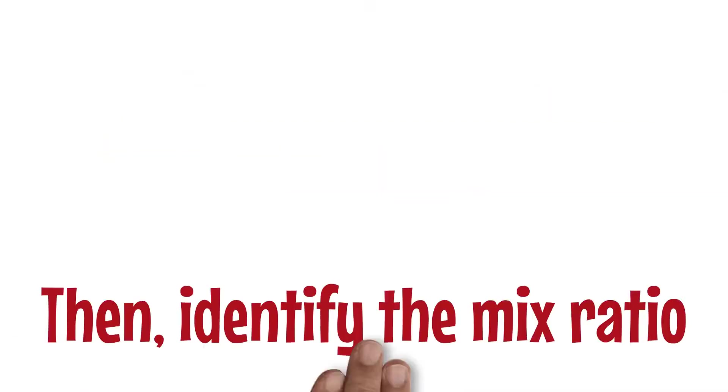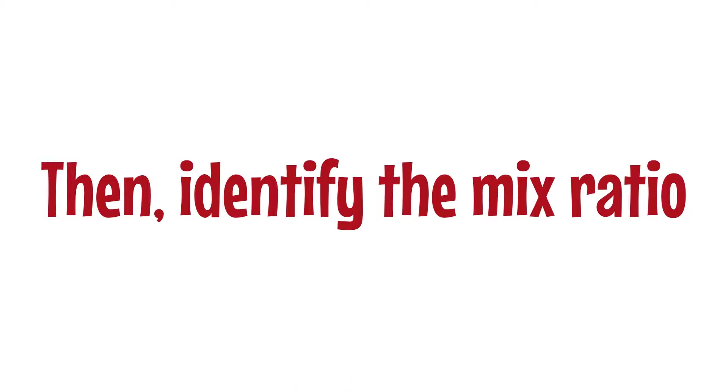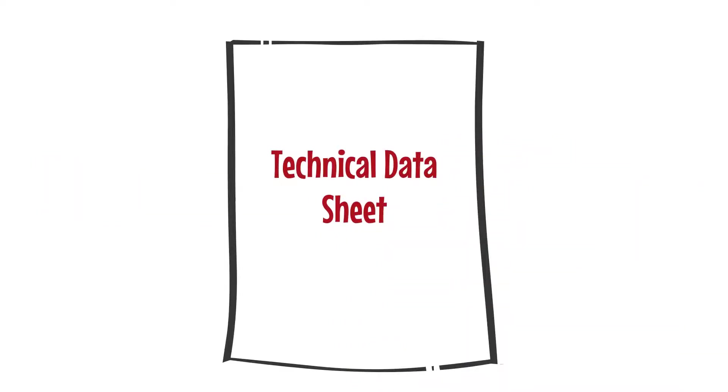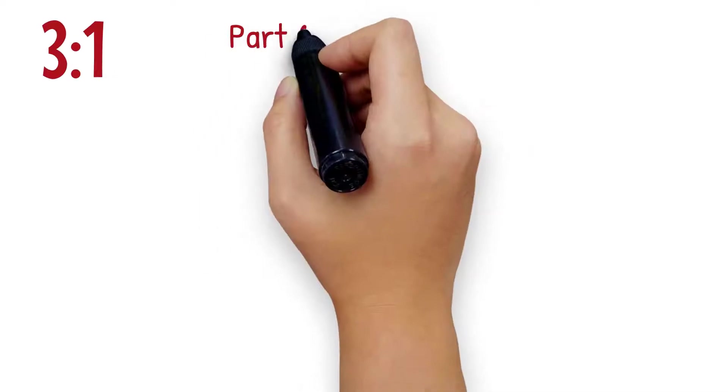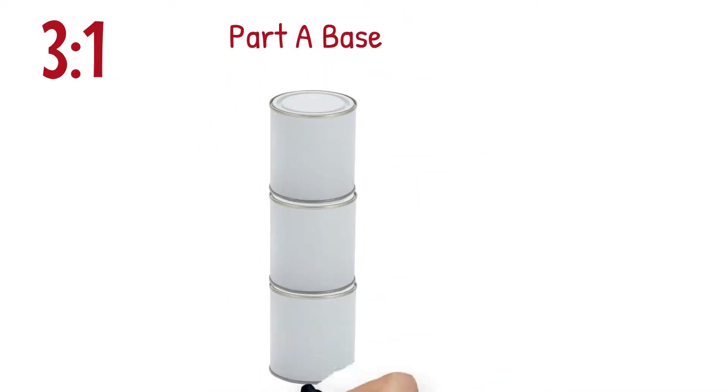Mix ratio. Then, identify the mix ratio. This will also be specified by the manufacturer. For example, a mix ratio of 3 to 1 means that you need three parts of Part A base with one part of Part B hardener.